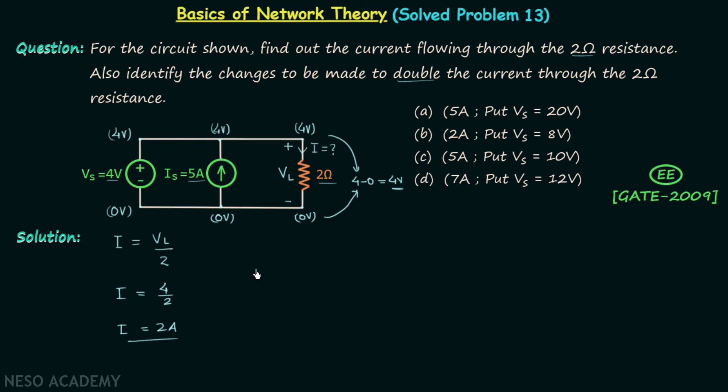So current I is equal to two amperes and you can notice one thing: the current I is not affected by the current source we are having. If you remember the lecture in which I gave you the tips and tricks related to the voltage source, I told you whenever there is a current source connected in parallel with the voltage source and we are performing the calculation on the load side, then we can always remove the current source.